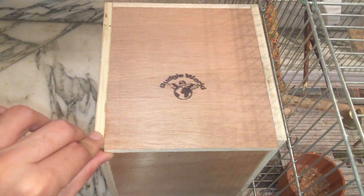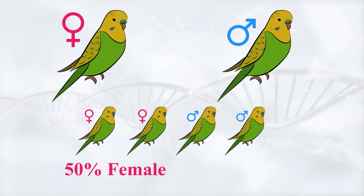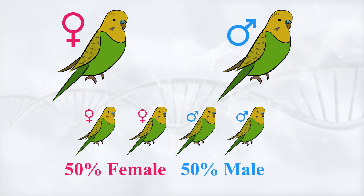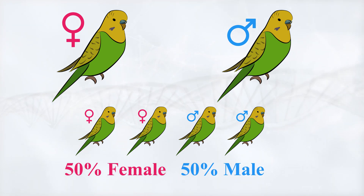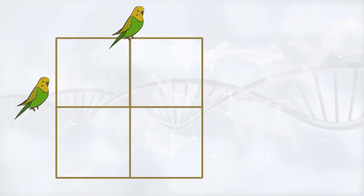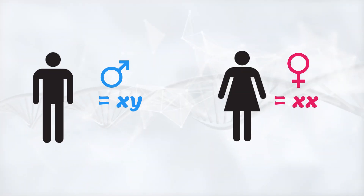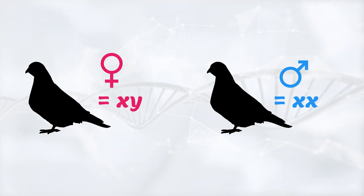Let's see now how we can use the Punnett Square to determine offspring outcome probabilities. Let's start with something simple — the probability of an offspring being female is 50%, and for a male, 50%, right? Let's prove that using the Punnett Square with budgies as our example. You might know that in humans or mammals, XY is male and XX is female. However, in birds it's the opposite — XY is female and XX is male.